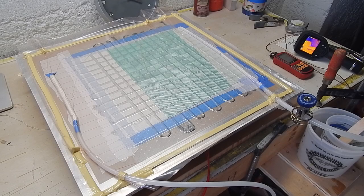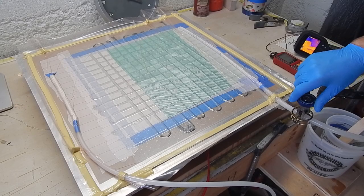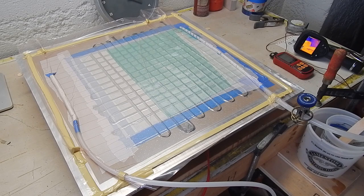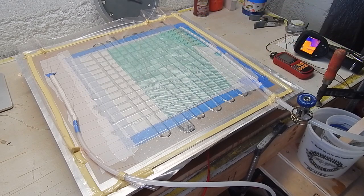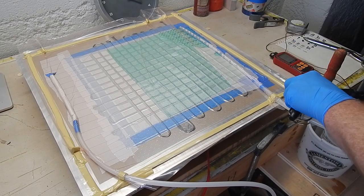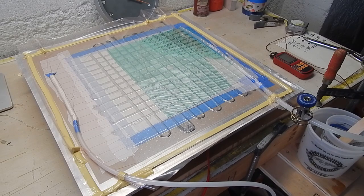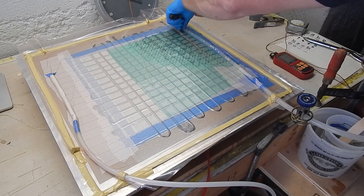Here is the infusion going. This is a ProSet infusion resin. You can see one of the mistakes I made is that it's feeding only from the end of the spiral wrap, so it's working its way diagonally across the panel there from that open end.